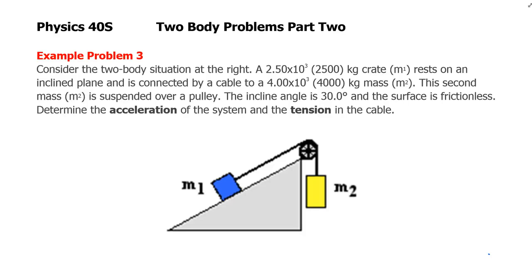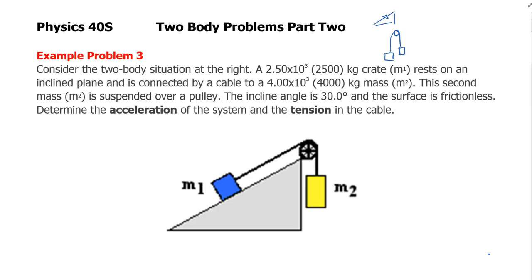This is the second video on two-body problems. Previously we did what we call the Atwood machine — two masses over a pulley. Before the two-body problems we did some questions with inclined planes, and now we're putting these things together.